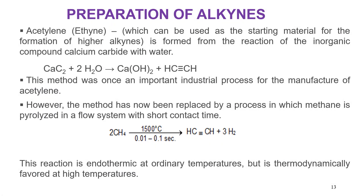How are alkynes prepared in industry? Industrially, alkynes are prepared using calcium carbide. This calcium carbide method was employed in the industrial production of alkynes, especially acetylene. But a newer, more enhanced process has replaced this carbide method, which involves methane being pyrolyzed at very high temperature. This reaction is thermodynamically favored at high temperature. So alkynes can be prepared from carbide or from methane.